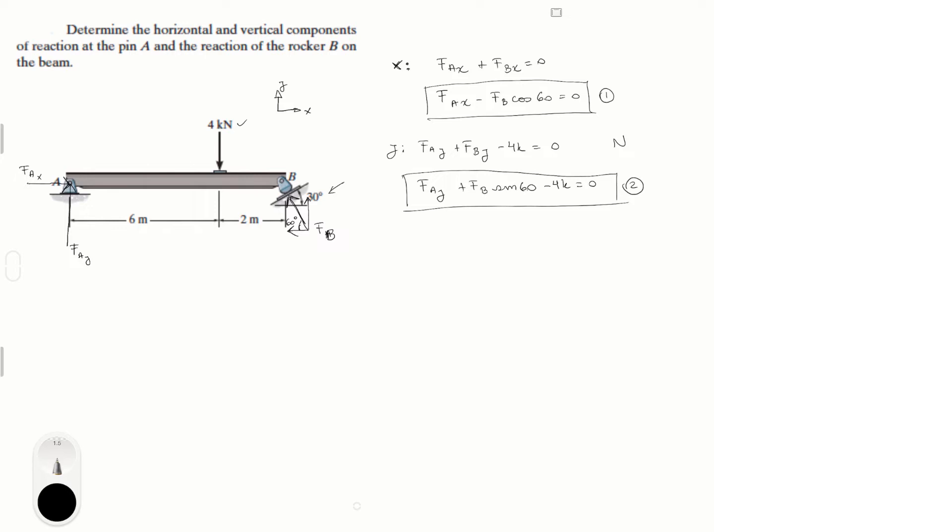Now we need one more equation because, as you can see, we have three variables. We have F of A in the X, F of A in the Y, and F of B. Now we have to find the last one, and for that we're going to do the sum of the moments at B.